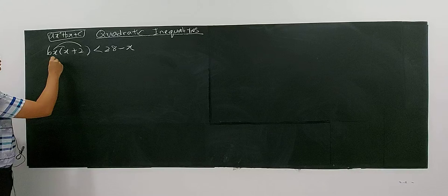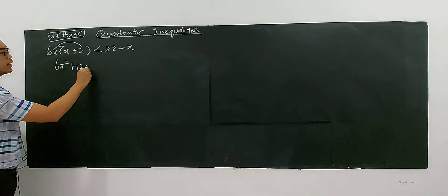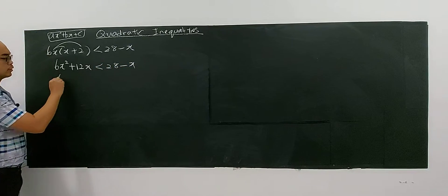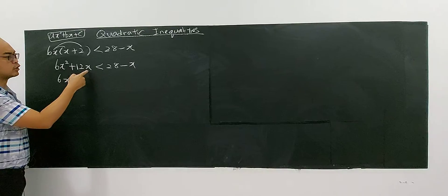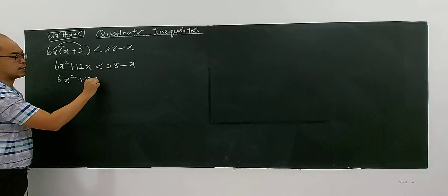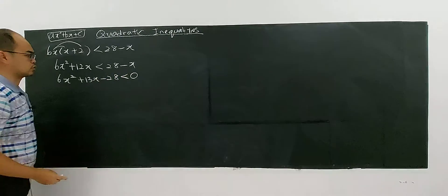Okay, let's see. This one you have 6x² plus 12x less than 28 minus x. You arrange it in the general form: 6x² plus 13x minus 28 less than 0.